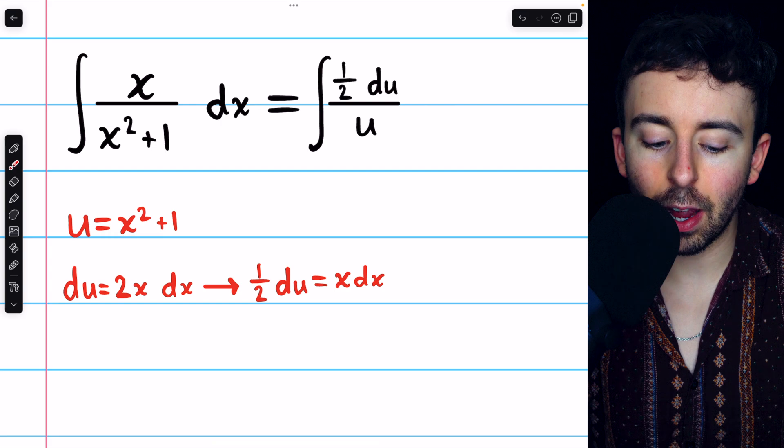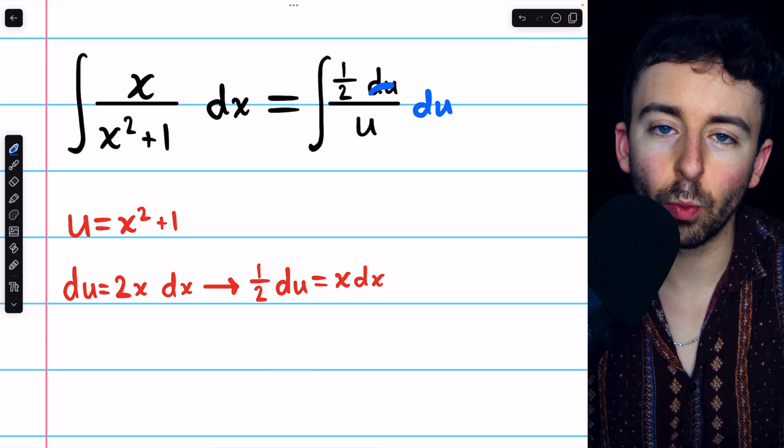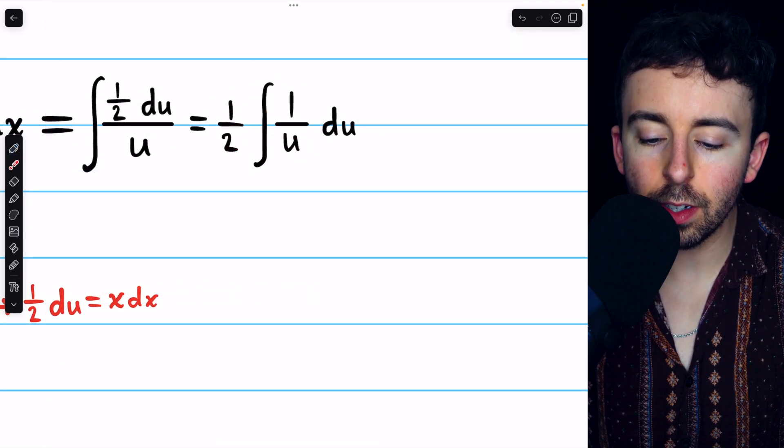Now we can take the 1 half outside of the integral and put the du on the side. So we have 1 half times the integral of 1 over u du.